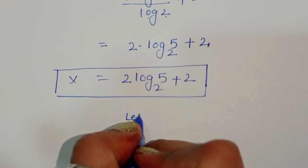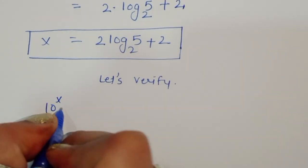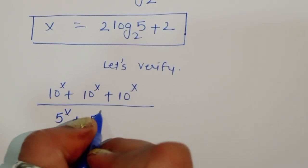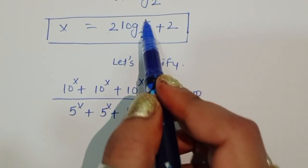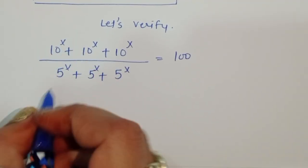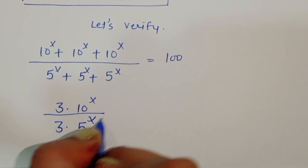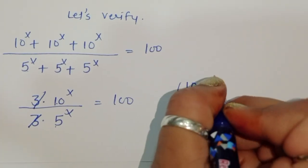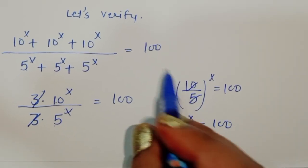Let's verify this is correct. Substituting back into the original equation: (10^x + 10^x + 10^x) / (5^x + 5^x + 5^x) = 100, with x = 2·log₂5 + 2. Simplifying gives 3×10^x / 3×5^x = (10/5)^x = 2^x = 100.